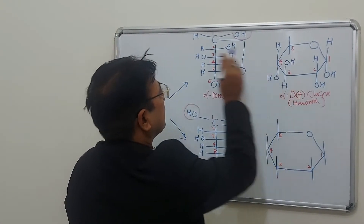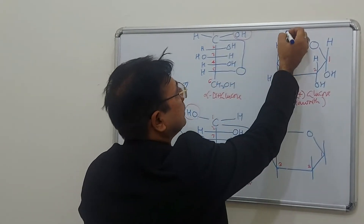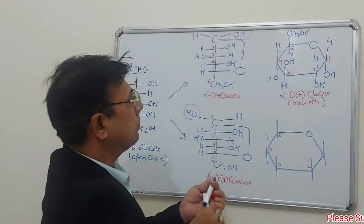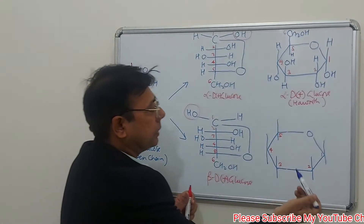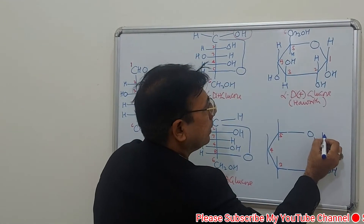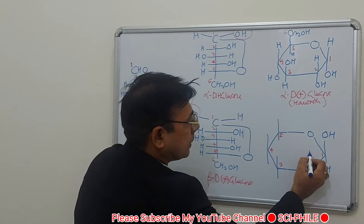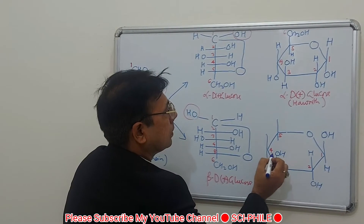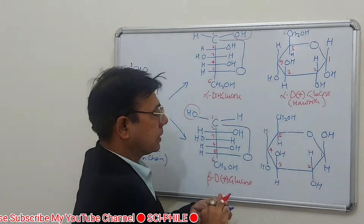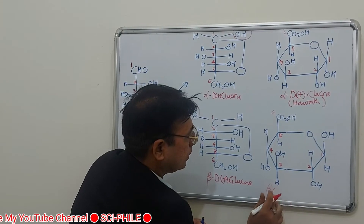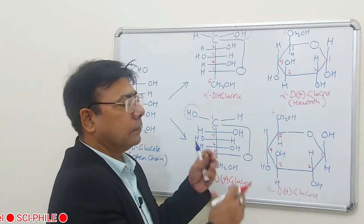On carbon 5, H is on the left in Fischer but goes down in Haworth. Carbon 6 carries the CH2OH group. This structure is alpha D-plus glucose in Haworth form. The beta D-plus glucose Haworth structure is similar except on carbon 1: H is down and OH is up, while the rest of the structure remains the same.